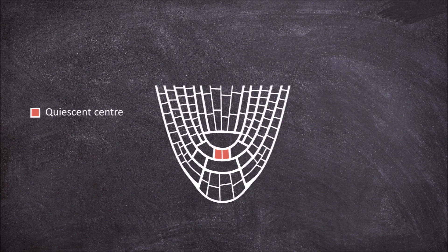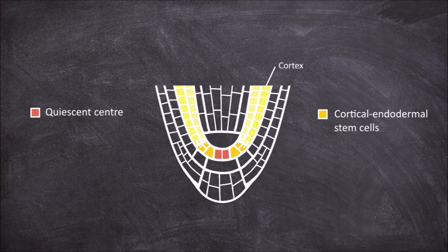The second region is the cortical endodermal stem cells. These stem cells form a ring around the quiescent center. The stem cells in this area undergo an anticlinal division then the daughter cells undergo a second periclinal division resulting in the cells that become the cortex and the endodermis.